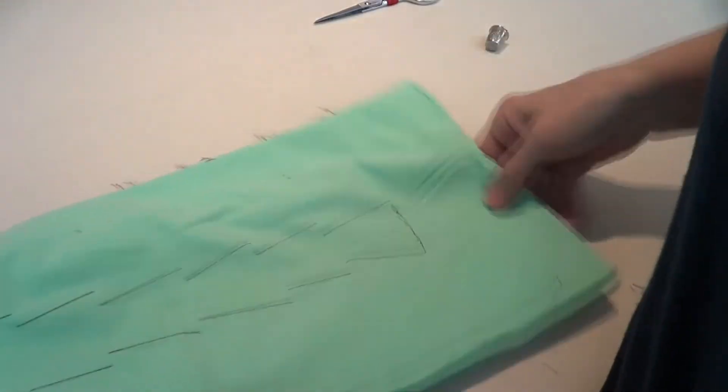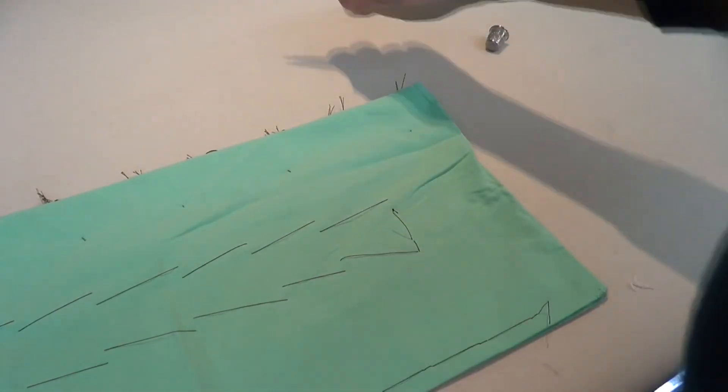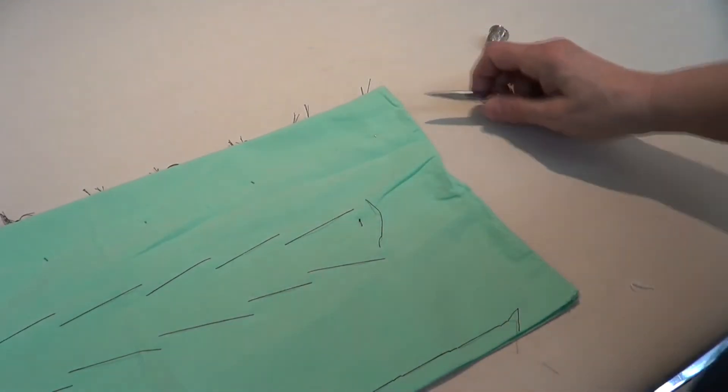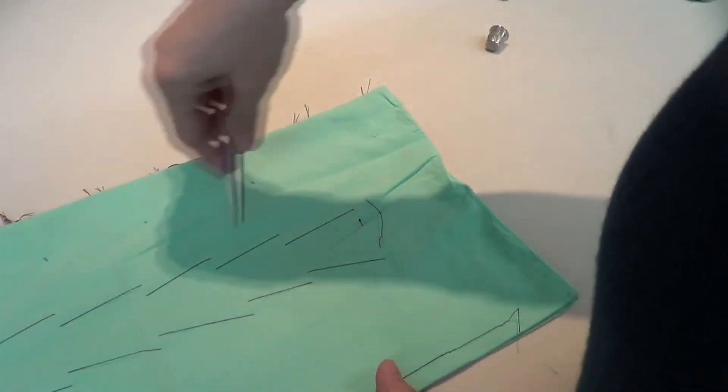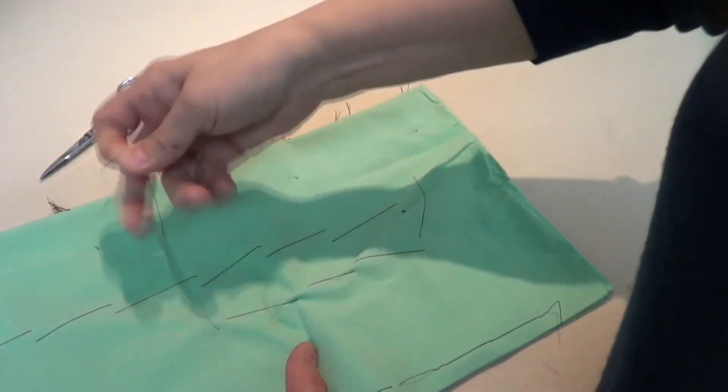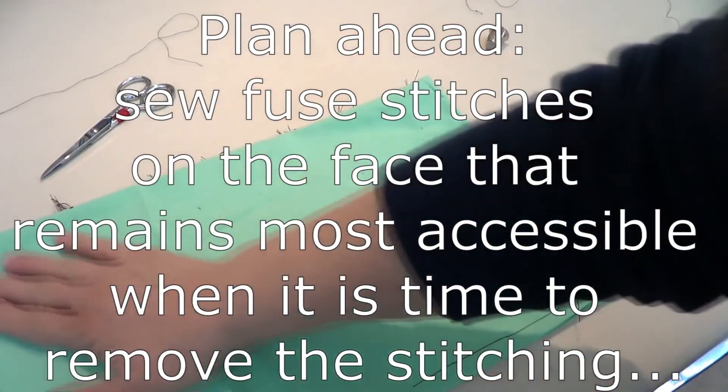Okay, so now I'm going to show you quickly how to remove this because we start with a knot and we end with a back stitch. If this was not going around the corner I could pull it all at once, but I can just quite easily remove my fuse stitching by giving it a pull.